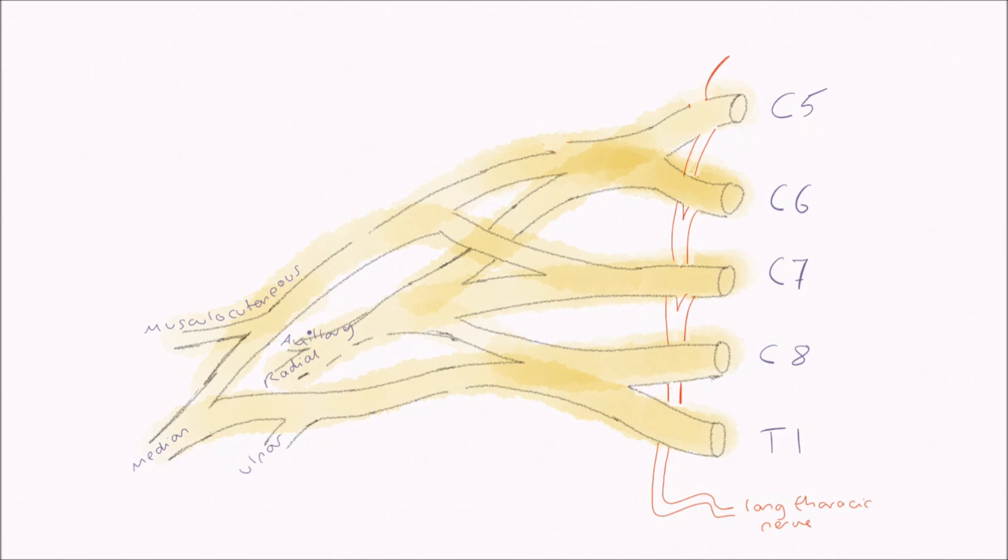The second is the dorsal scapula nerve, originating from root C5 and passing posteriorly to innervate the rhomboid muscles. These antagonize serratus anterior by retracting the scapula.